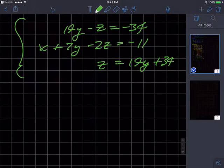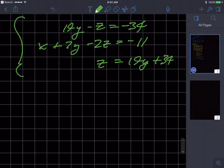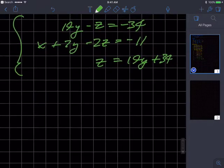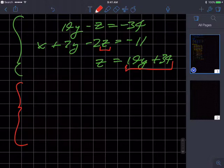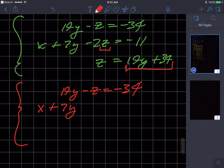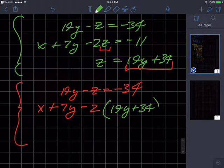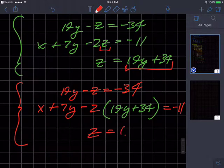So if you watch the other video, you know. If you don't, I always try to write all my equations down again. Only writing and changing the equations that I altered so that I don't have to keep looking up here. I just have to look at what I have in front of me. Now, I'm going to take this and substitute it in for this z, okay? So my new equations are going to look like this. 19y minus z equals negative 34. x plus 7y minus 2, 19y plus 34 equals negative 11. And then I have this guy down here, which is still z equals 19y plus 34.